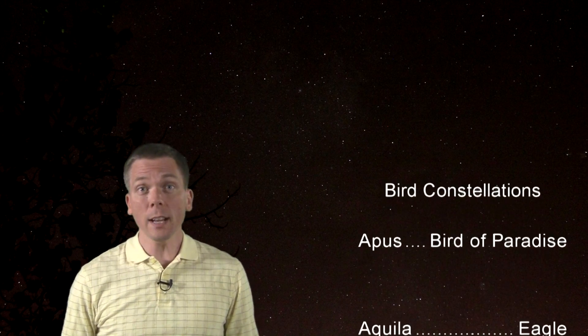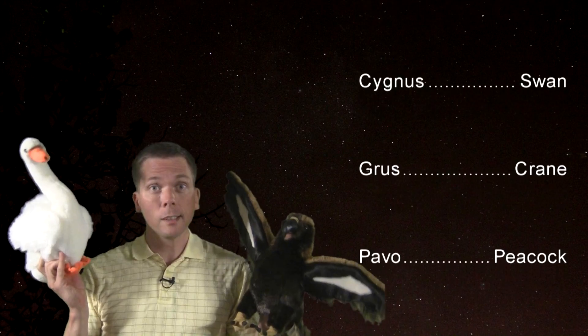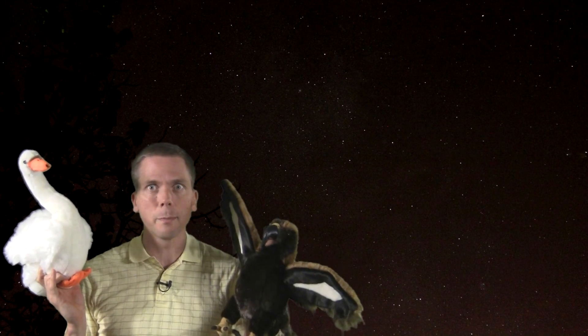Birds are somewhat over-represented in the night sky. Of 88 constellations, 10 of them are birds. I mean, take a look at all of them. There's a bird of paradise, an eagle, dove, crow, swan, crane, peacock, toucan, and a phoenix, which is, granted, a mythical bird, but still a bird.